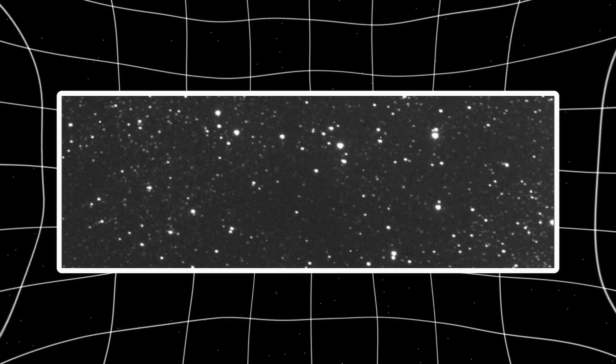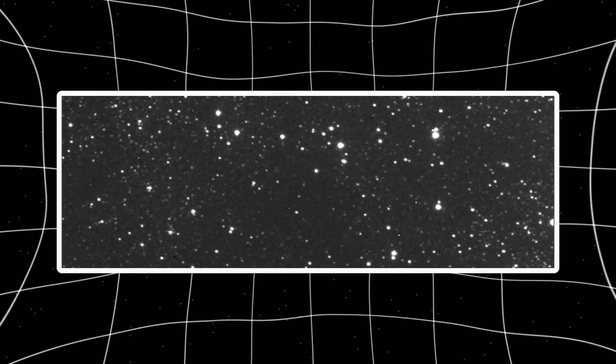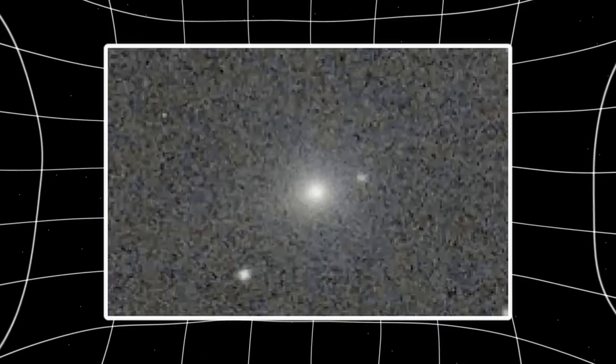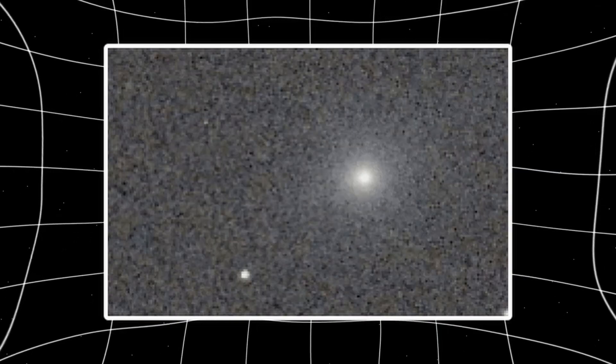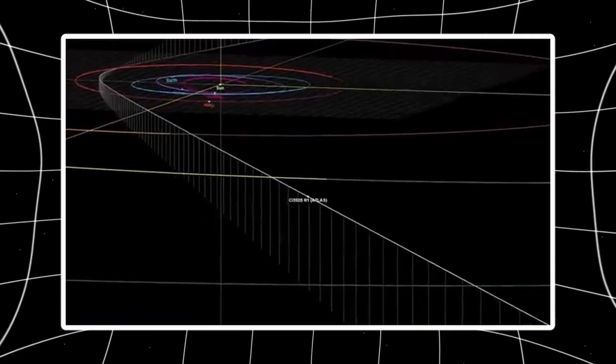At this distance, after perihelion, most comets collapse into diffuse clouds. The brightness fades, the core blurs. The show ends. This one didn't get the memo.